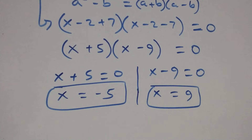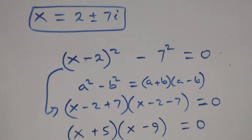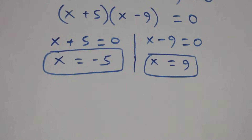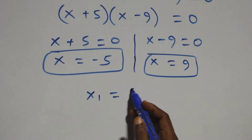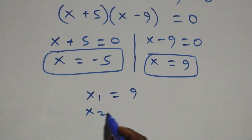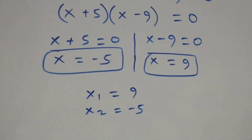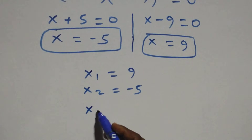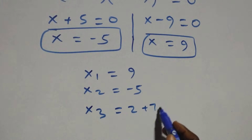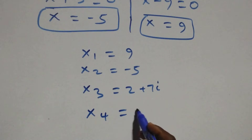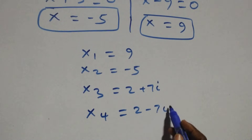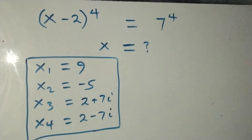Altogether we have four solutions: two real and two complex. Writing them out: x₁ equals 9, x₂ equals minus 5, x₃ equals 2 plus 7i, and x₄ equals 2 minus 7i.